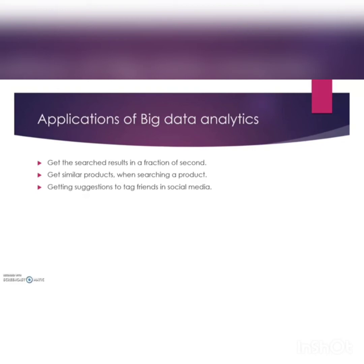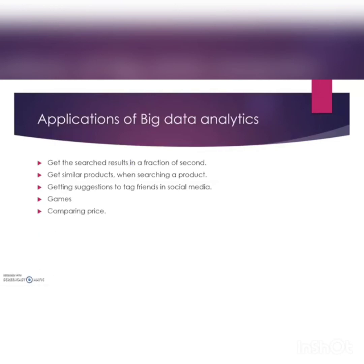Third application: when you upload photos in social media like Facebook or Instagram and tag friends, you get friend-tagging suggestions — this is because of big data analytics. Fourth application: in games, when you get a high score, it notifies you of rankings — first place, second place, third place — comparing you with friends. Games also use big data analytics.